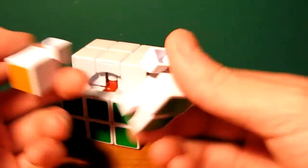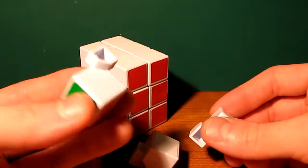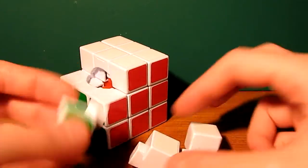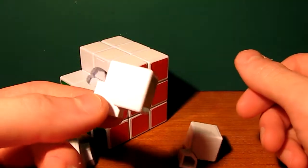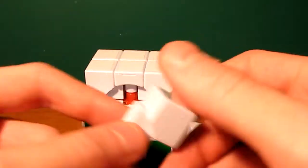Now you'll notice the cube has these different cubies. There are the corner pieces, there's 8 of those, and the edge pieces, there's 12 of those, as well as the center and the core which the centers are attached to.